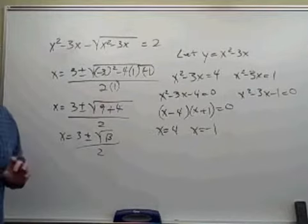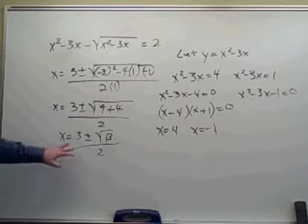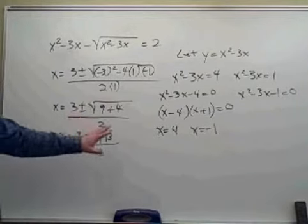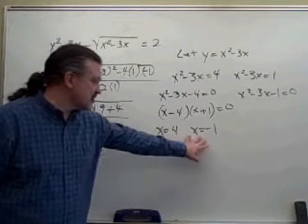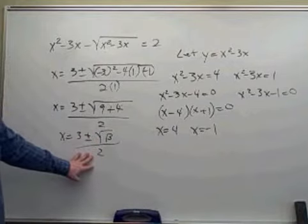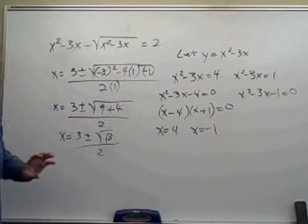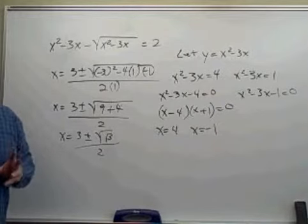And I can't simplify the square root of 13 anymore. So we have our solutions, our irrational solutions. So this equation we've come up with two rational solutions, two irrational solutions. Since the original equation was a radical equation, we would need to check all of our solutions.